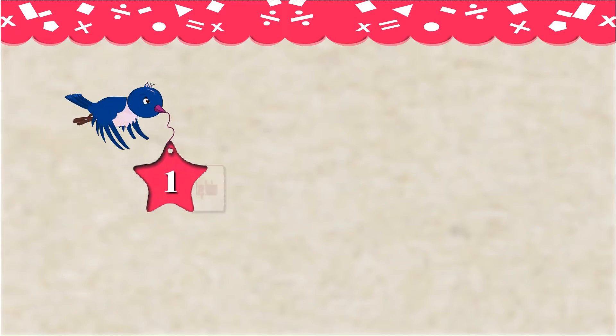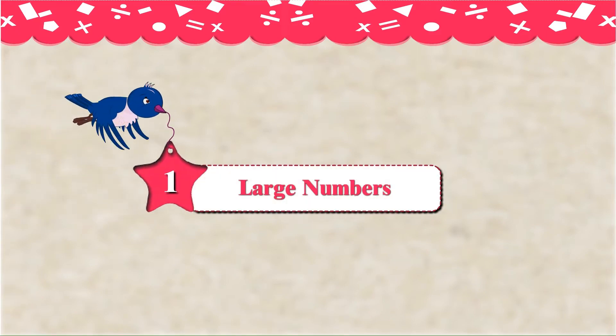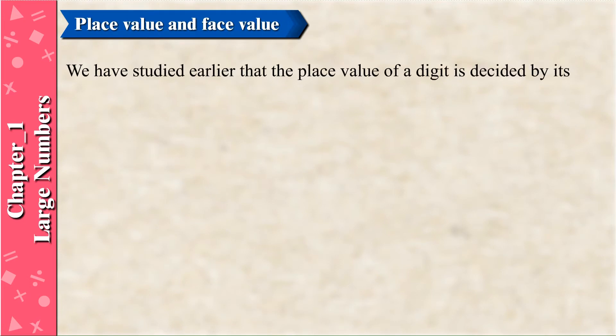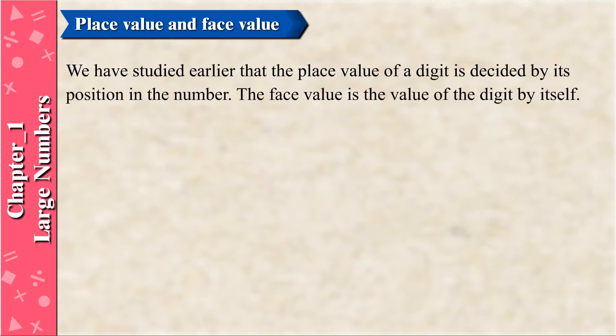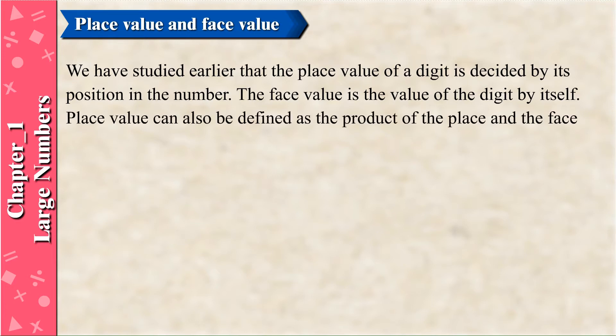Chapter 1: Large Numbers. Place Value and Face Value. We have studied earlier that the place value of a digit is decided by its position in the number. The face value is the value of the digit by itself. Place value can also be defined as the product of the place and the face value.